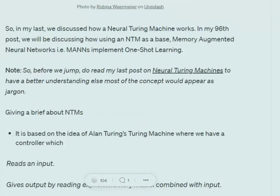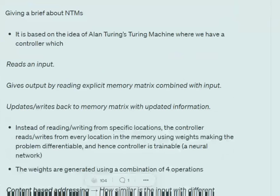Neural Turing machines are based on the idea of Alan Turing's Turing machine, which works in the following manner. It takes an input, and then there is a neural network called the controller that, using this input and an external memory called a memory matrix, gives us an output. Depending upon the input, if it is adding some new information, the memory matrix is also updated.